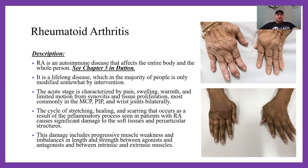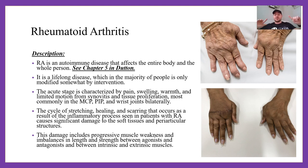Now let's talk about rheumatoid arthritis. RA is a very complex diagnosis — it's an autoimmune disease where multiple joints of the body are affected simultaneously. We worry about people with RA for things like cervical spine instability, and as you can see in these pictures, severe hand deformities.